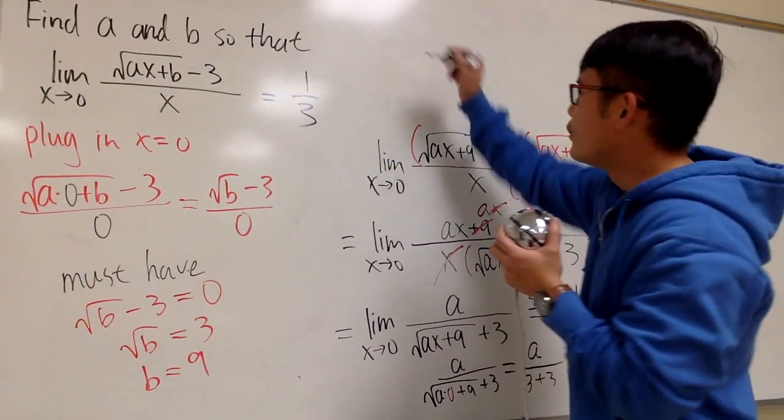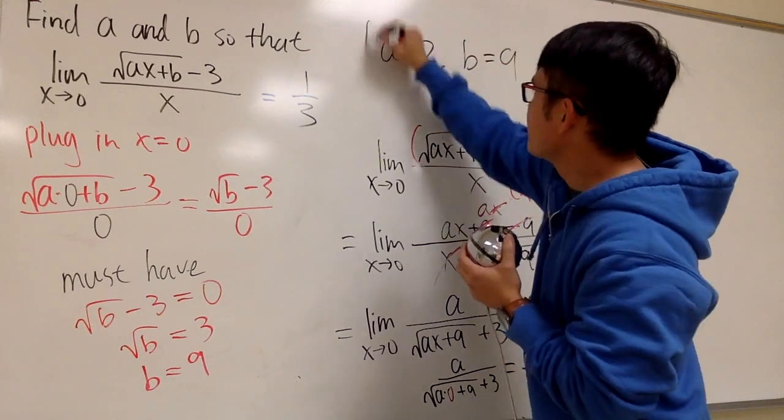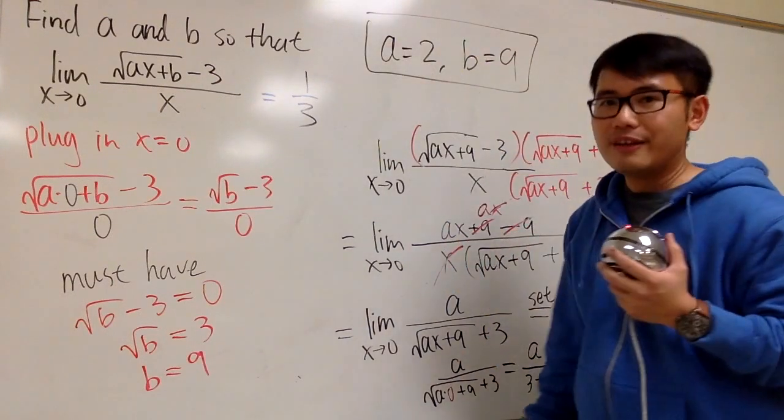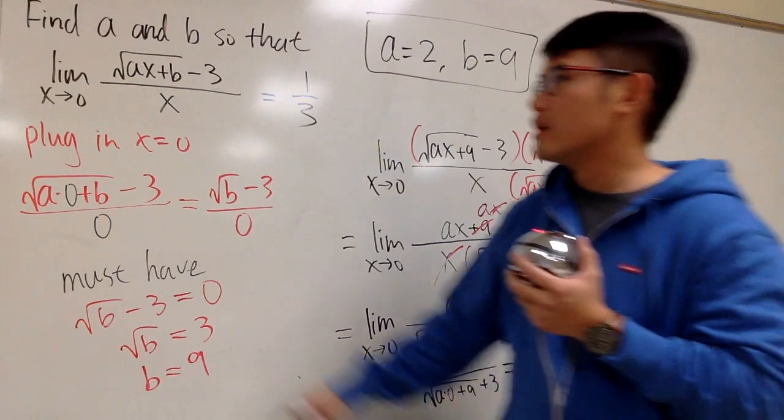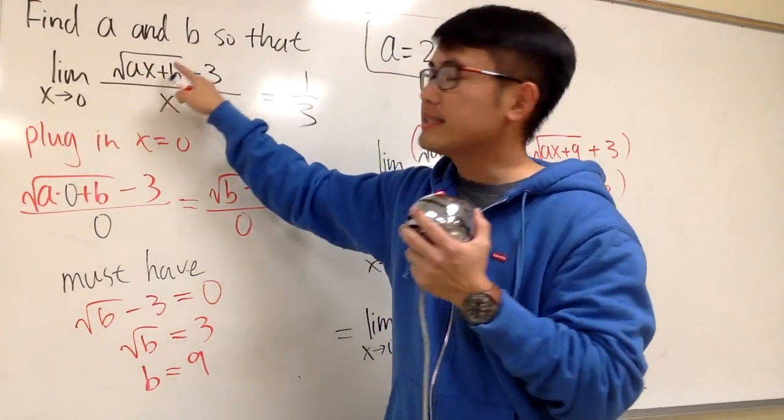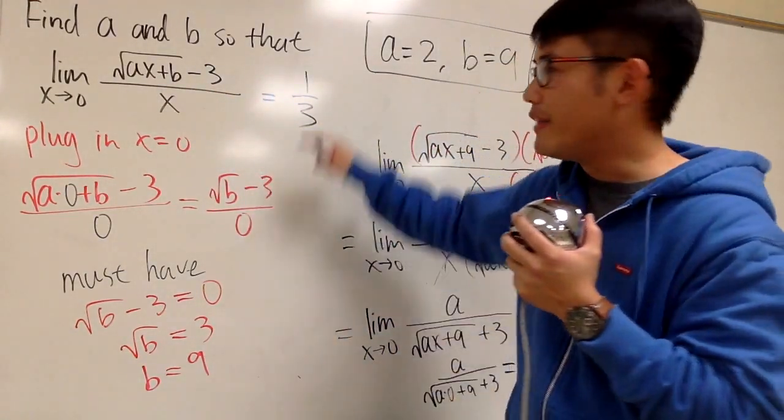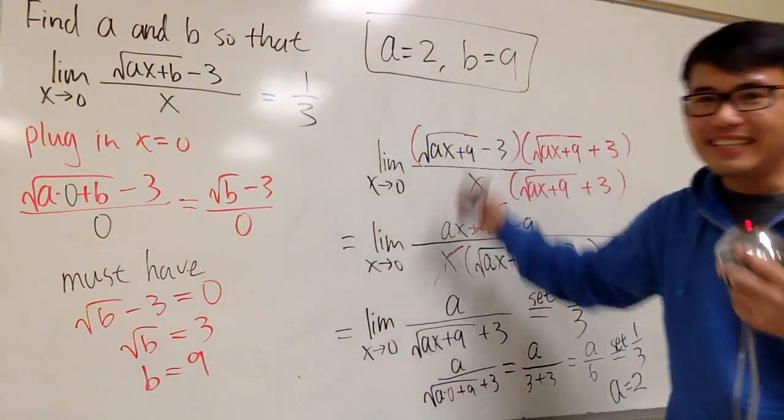And there we have it, right here, let me write down the answer. a is equal to 2, and b is equal to 9. And, of course, if you want to work this out again, the limit as x is approaching 0, square root of 2x plus 9, minus 3, all over x, you will end up with 1 third. And that's it.